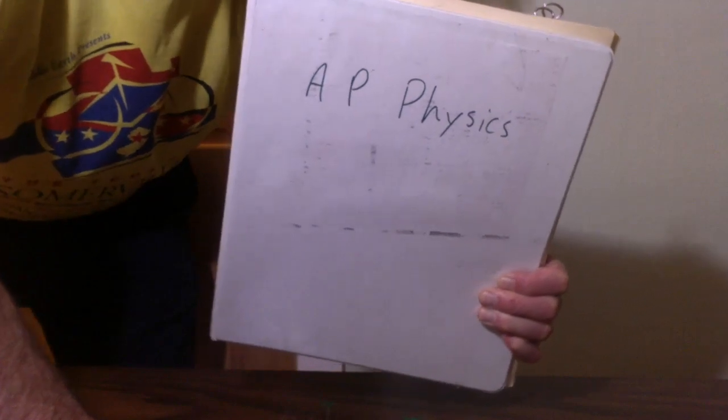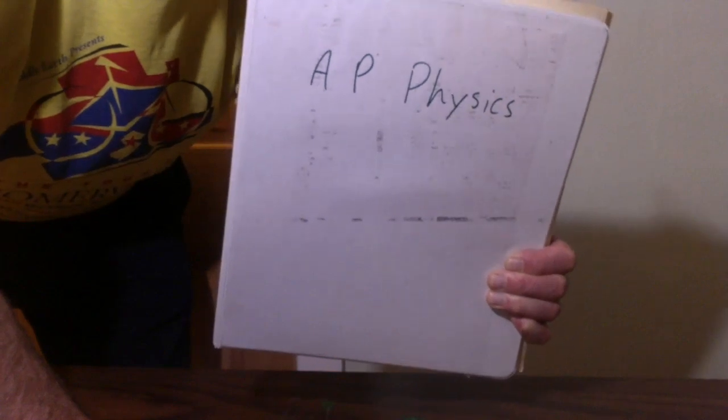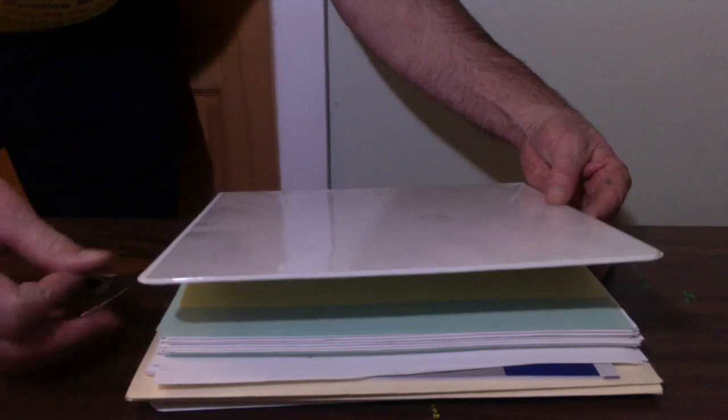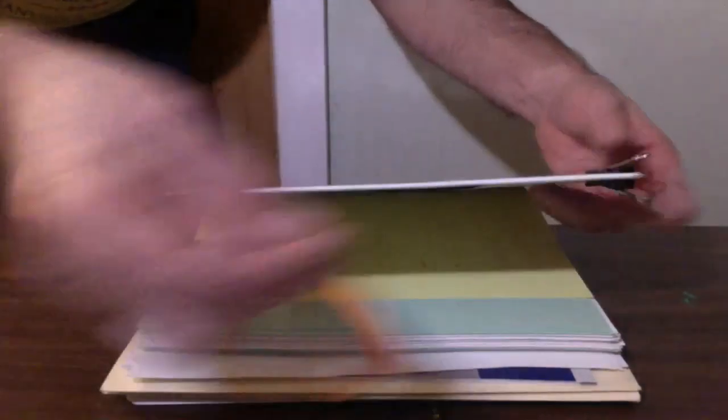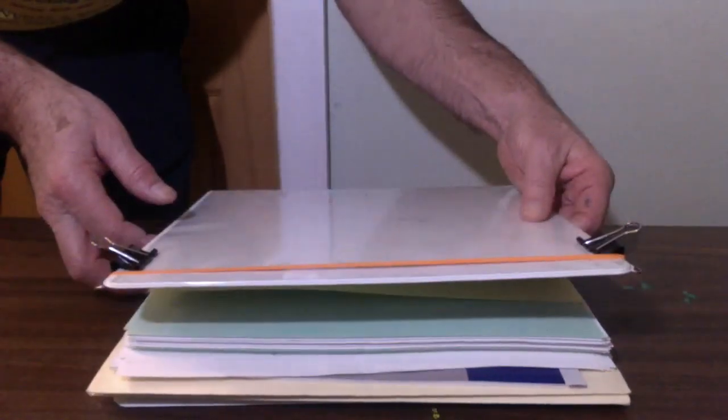Plan B, the AP physics binder. Okay now I know you're all taking AP physics next year so this has got to work. Okay here we go. I got a clip. I got another clip. I got the rubber band.